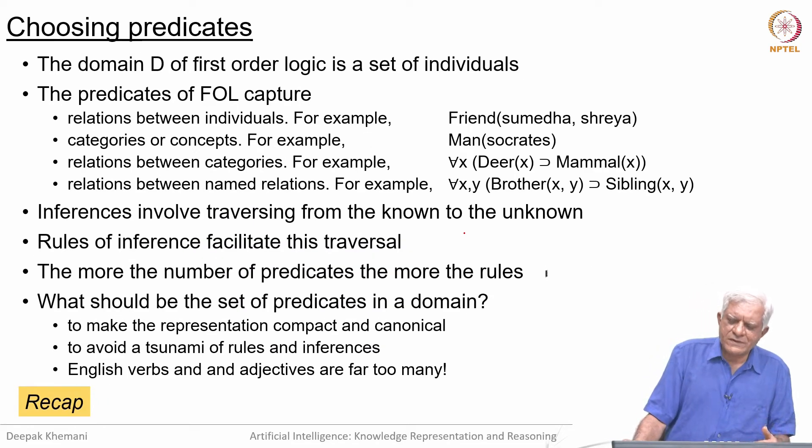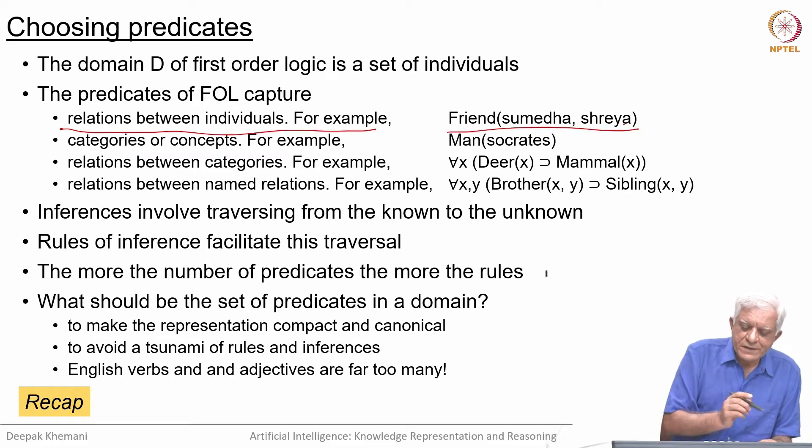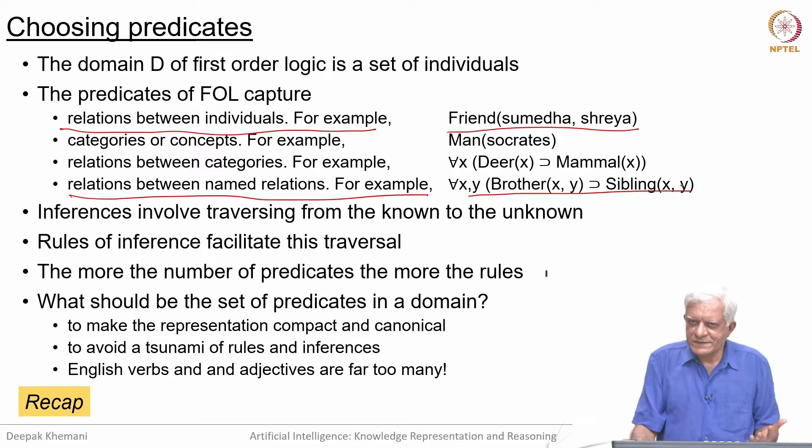We also talked about what kind of things we want to represent. Today we will focus on relations between individuals. For example, we can say that Sumedha is a friend of Shreya. We will also focus on relations between named relations. For example, if X is a brother of Y, then X is a sibling of Y. What relations should we choose? What predicates should we choose? And how are they related to each other?